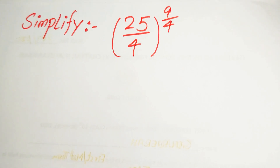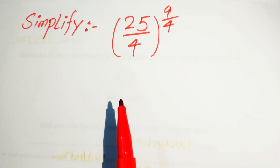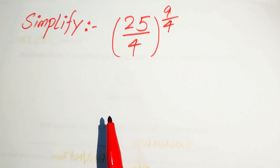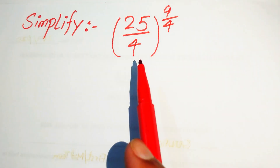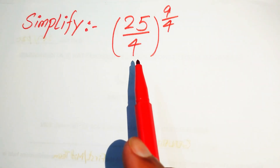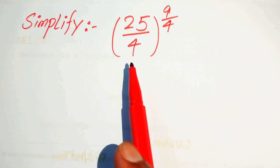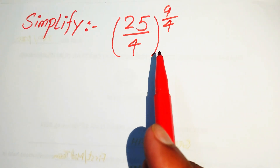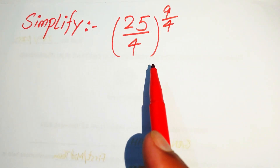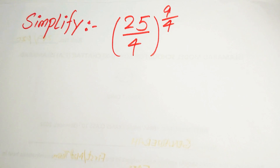Hello everyone. How to simplify this nice algebraic expression into the simplified form. Here we have 25 divided by 4, and its power is 9 over 4. Now we write this into the simplified form.